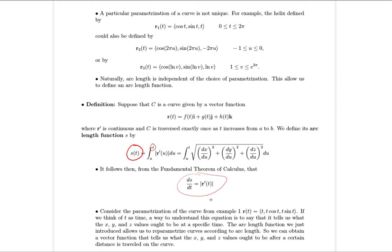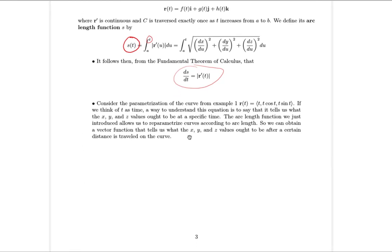Finally, there's a note that although we won't do examples of it in homework or on tests, you can also re-parameterize any curve by arc length itself — using s as the parameter instead of t. The idea is: after you've traveled a certain distance along the curve, where are you? As opposed to after a certain amount of time t has elapsed. I just want you to know that that's something that can be done.